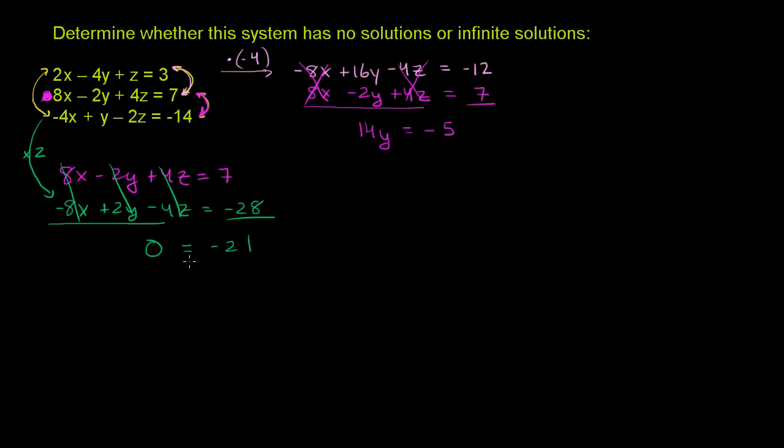Well, this is a nonsensical answer. 0 can never be equal to negative 21. No matter what x, y, or z you pick, 0 cannot be equal to negative 21.